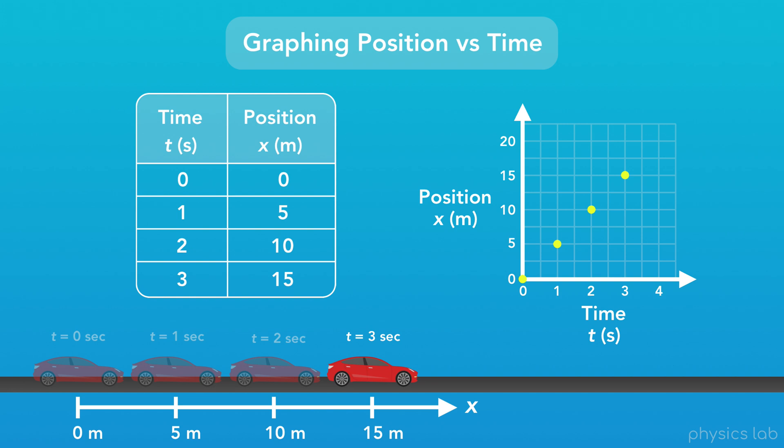Now that we have some data points on our graph, we can connect the points with lines, like this. And there we go. For this car's motion, we have graphed the position versus time, and now we have another way to visualize that motion.